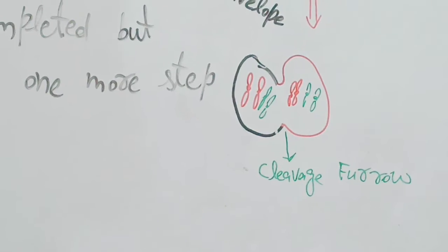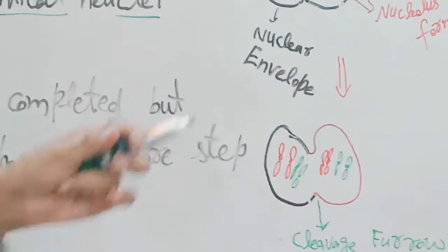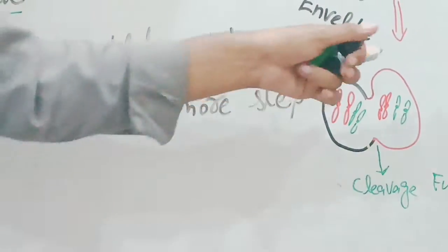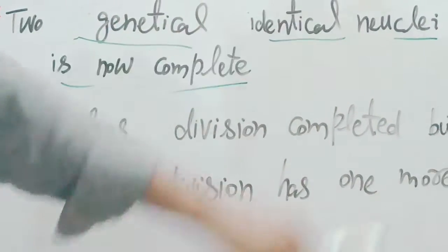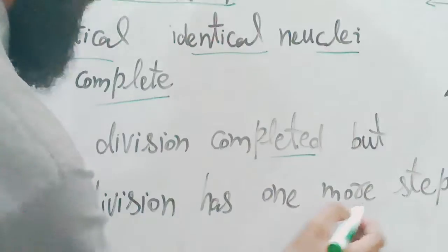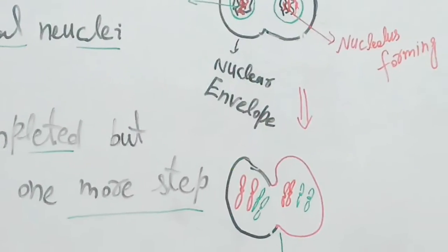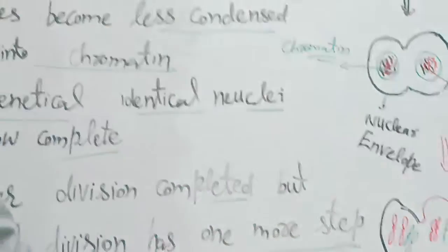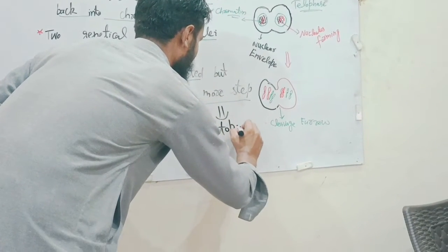Nuclear division is complete, but the cytoplasm is not yet divided. The nucleus has divided, but the cytoplasm remains whole. Our next step will be cytokinesis, which we will study in our next lecture.